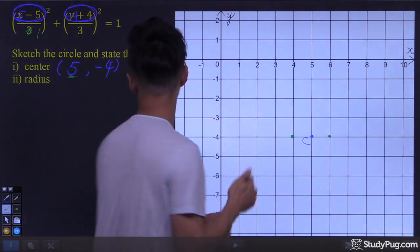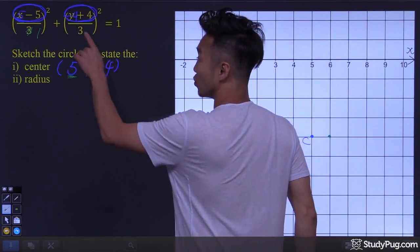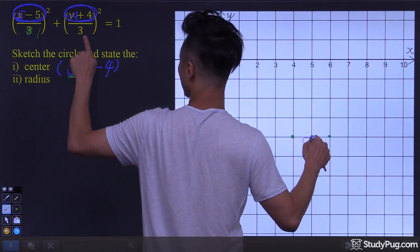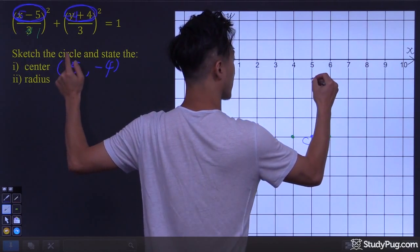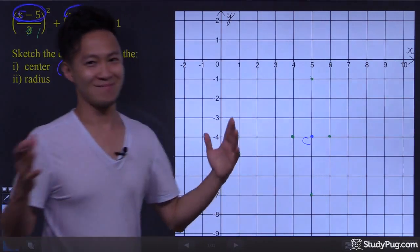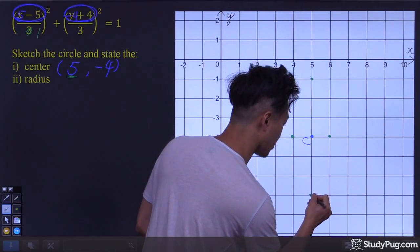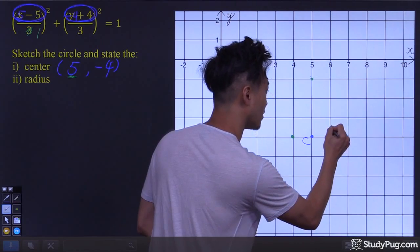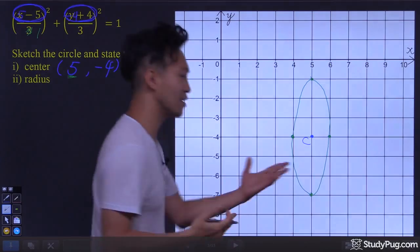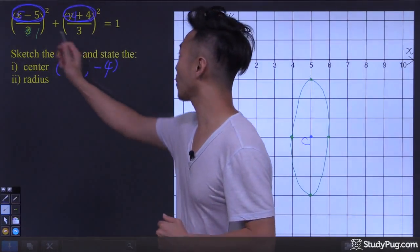Now, in the y-direction, same thing — we're going to move three units in either direction. From the center, we move three units up — one, two, three — right here. And three units down — one, two, three — right here. Now all we're going to do is connect the four outer points with a smooth curve, and that gives us an ellipse. That was the ellipse with denominators having different values.